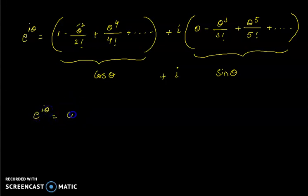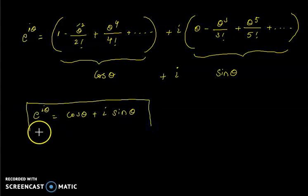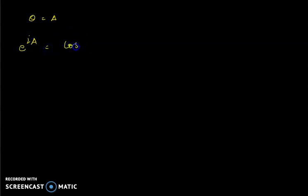So Euler was right: e^(iθ) = cos θ + i sin θ. This is Euler's form — he expressed a complex function in terms of the trigonometric functions sine and cosine. Now let θ = a, so e^(ia) = cos a + i sin a.